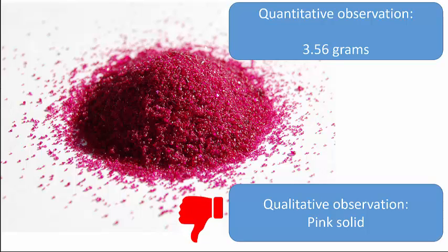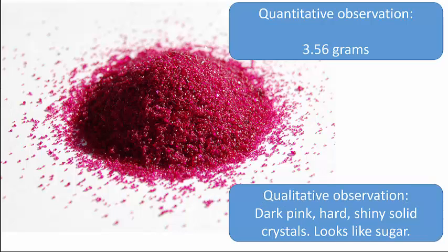A pink solid could look like a variety of different things. It doesn't tell me anything about the consistency of the solid — whether it's flaky, powdery, or crystal — and it doesn't tell me much about the shade of pink, whether it's bright, dull, dark, or light. Making a comparison is a great way to record a qualitative observation. We could note that it looks almost like sugar crystals, that it's a dark or magenta pink, and that it's a little bit shiny. So a better observation would be: 'This is a dark pink, hard, shiny, solid crystal — it looks like sugar.' That would be a great qualitative observation.